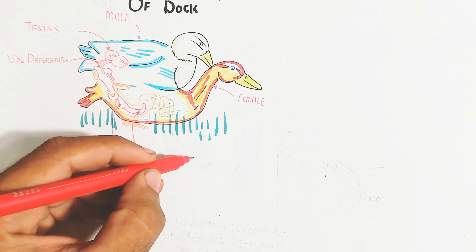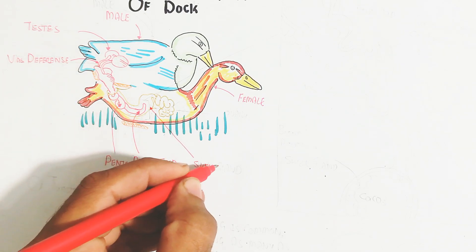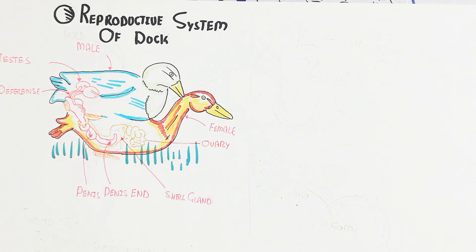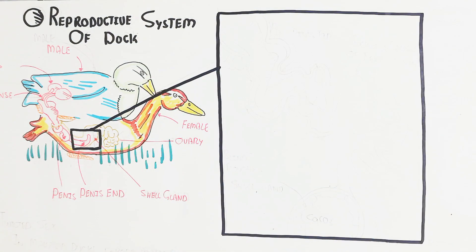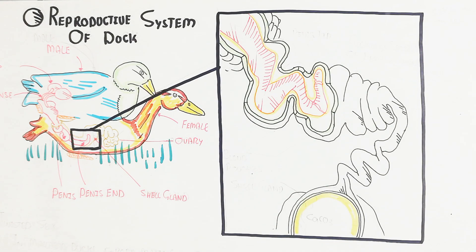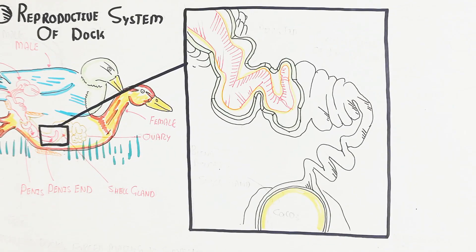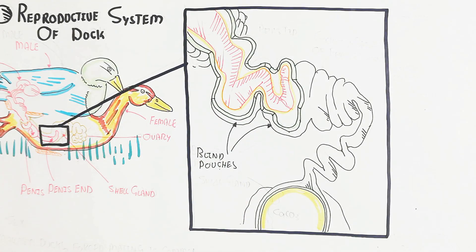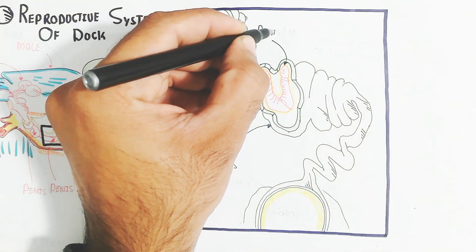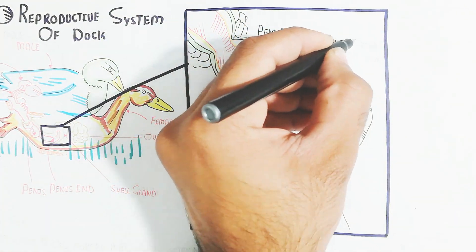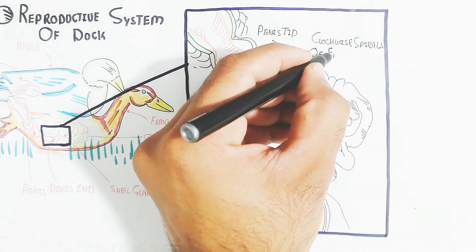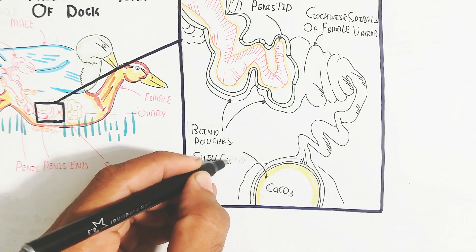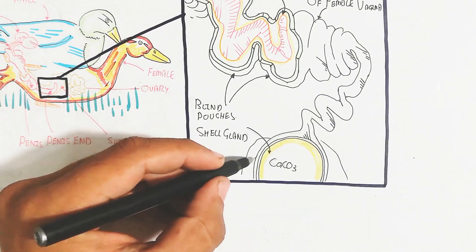This is the penis, the shell gland, and the ovary. Let's draw a bigger picture. Here is the penis - remember one important thing: blind pouches are present which will inhibit the insertion of sperm into the ovary. This is the penis tip with clockwise spiral of female vagina and calcium carbonate secreting shell gland.